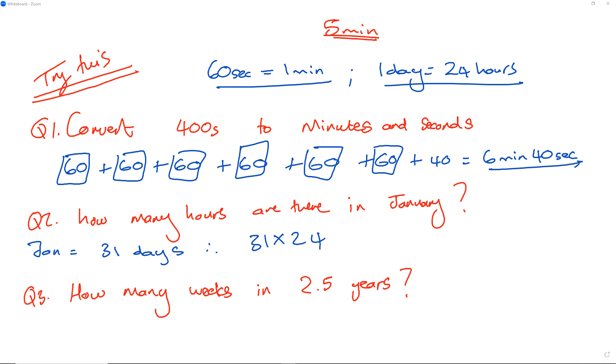31 times 24 comes to 744. I could also write this out using long multiplication and get 744. Don't forget to write hours because that's what you calculated.